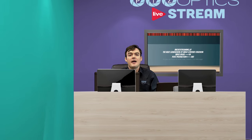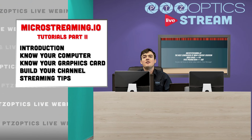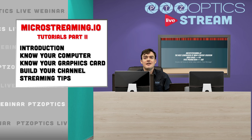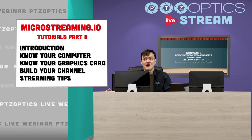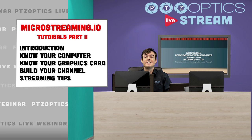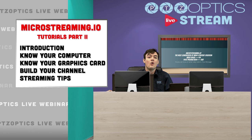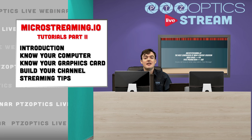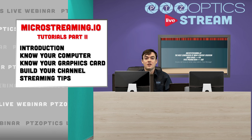As part of this video series we've talked about micro streaming, knowing your computer, knowing your graphics card. Next we're going to talk about building your channel, and then we've got some streaming tips about sending a single stream to a provider like joycaster.co or restream.io and sending that one stream to like eight different CDNs — that's a really great way to do that.